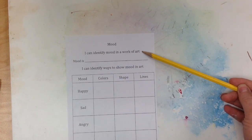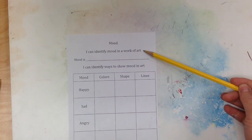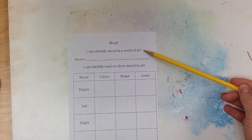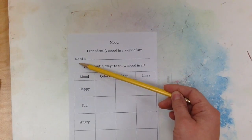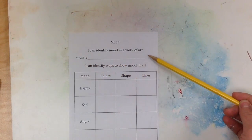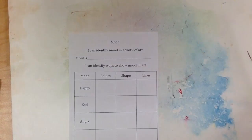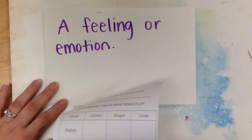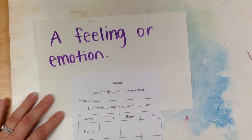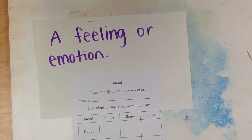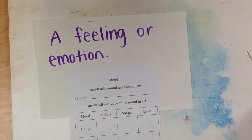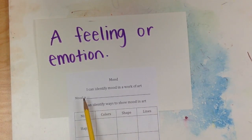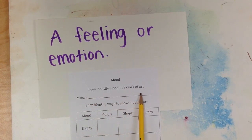Before we can identify mood, we should be able to tell what mood is. It says here 'mood is' and we need to fill in the blank. Mood is a feeling or an emotion. Go ahead and pause the video and write that right here: mood is a feeling or an emotion.